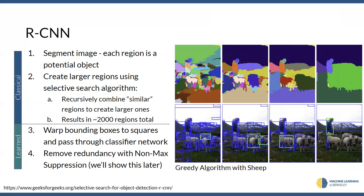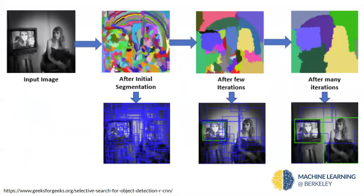A couple of clarifications: since bounding boxes can be arbitrary sizes, and a CNN can't take arbitrary-sized input, the paper proposes simply warping/scaling the cropped region to a square before feeding it in — though this can cause distortions, like a stretched pencil. Also, it's possible to classify the same object multiple times since multiple boxes can cover the same area. This is also an issue with sliding windows. There's a way to remove this redundancy called non-max suppression, which I'll get to later.